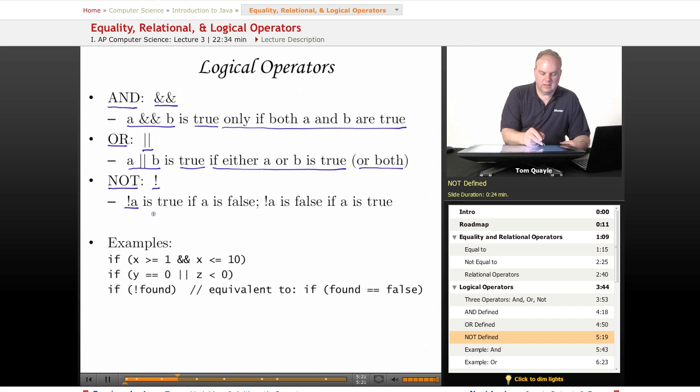Not, not A is true if A is false. So not simply reverses the value of a Boolean that it's placed in front of. If the Boolean is true, not makes it false. If the Boolean is false, not makes it true.